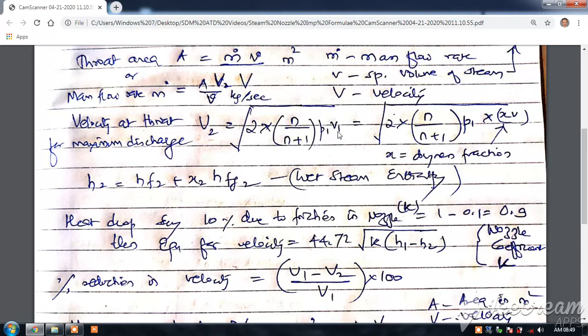So when we know that there is a wet stream, normally at throat sometimes it is a wet stream, then we will use this relation: square root of 2 into in bracket n divided by n plus 1 into P1 into x, where x is the dryness fraction, into V.